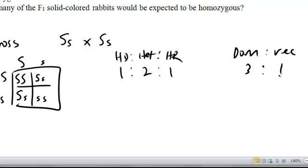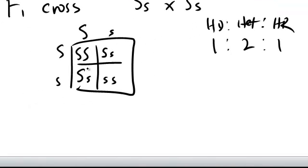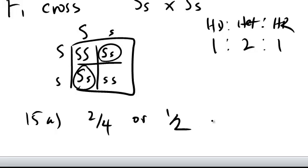So if we consider that 15A, the question is what proportion of the F2 spotted rabbits in the above problem would be heterozygous? Well, that's 2 out of the 4. So here's 2 out of the 4. So that means 15A, 2 out of the 4, or 1 half, are heterozygous.